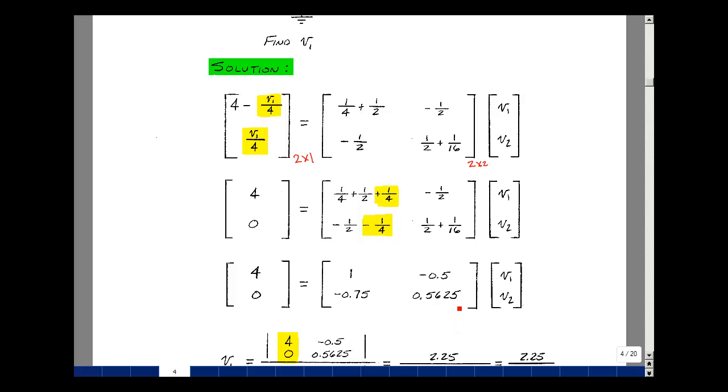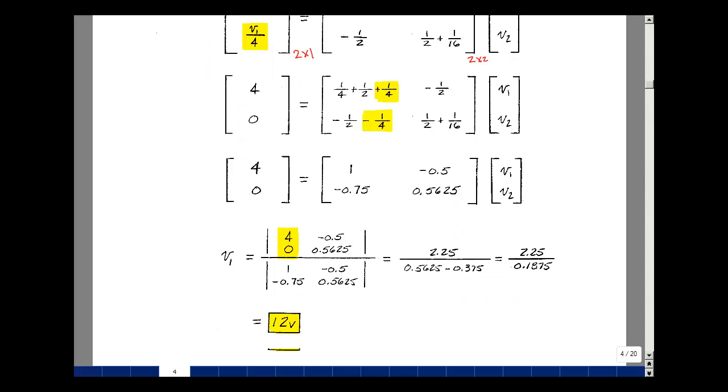All right, let's solve for V1 in our problem. And we could use Kramer's rule to do that. So we'll take the left-hand side of the equation and put it into column 1, and then we'll find that determinant and divide it by the determinant of the conductance matrix. So 4 times 0.5625 minus 0 times minus 0.5. So just the product of these two, which turns out to be 2.25.